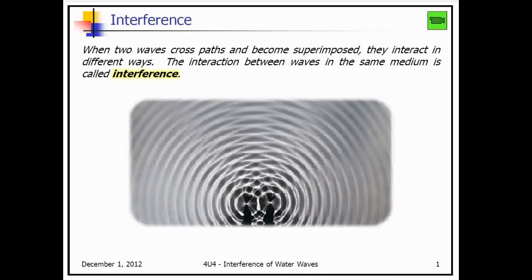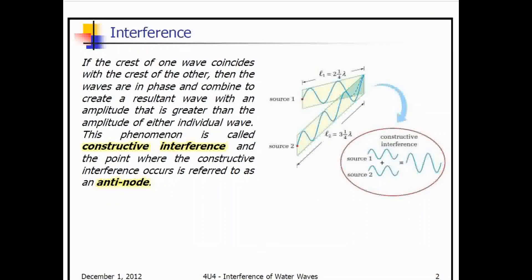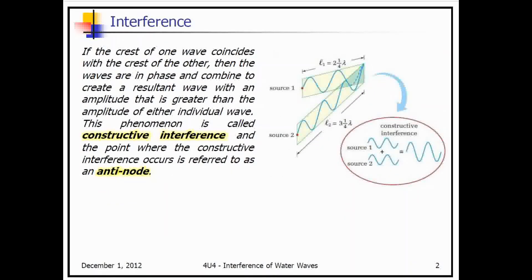The interaction of a light wave with a water wave, we don't talk about that as being interference. If the crest of one wave coincides with the crest of another, the waves are in phase, and they create a resultant wave with a greater amplitude than each of the individual waves. If we have two crests hitting each other, we have a very large super crest — we call that constructive interference.